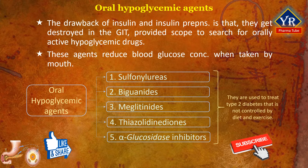In this lesson, we learn the first class of oral hypoglycemic agents, i.e. sulfonylureas.